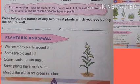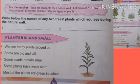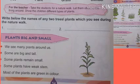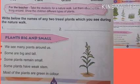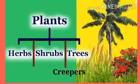We have learnt about different types of plants — big and small. We see many plants around us. Some are big and tall, some plants remain small, and some plants have a weak stem. But most plants are green in color. Around us, there are many different types of plants — some are small, some are big, some have a weak stem, some have a strong stem, but almost all plants are green in color.